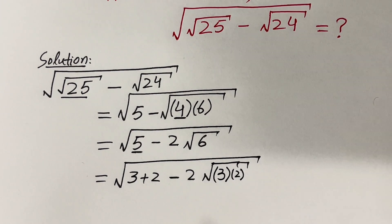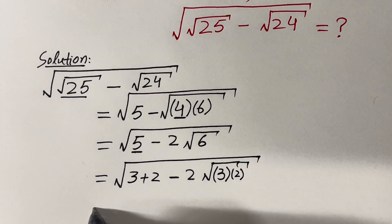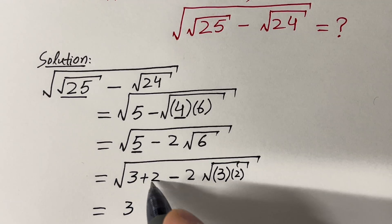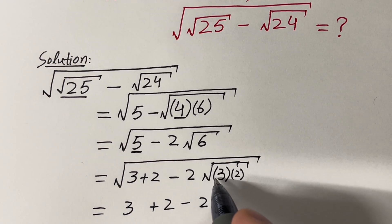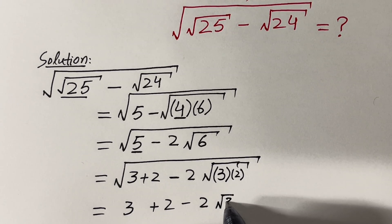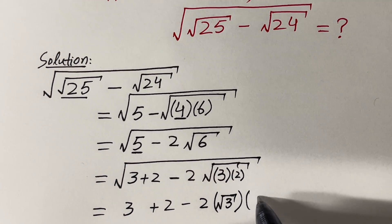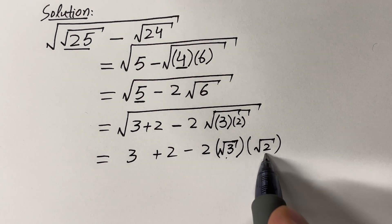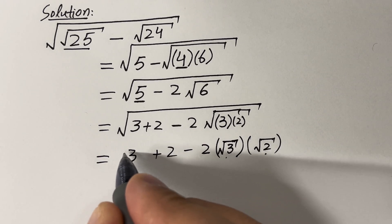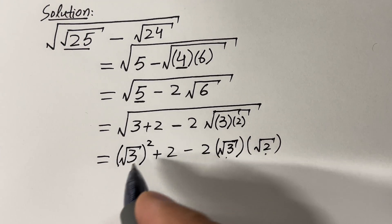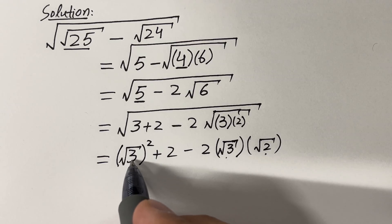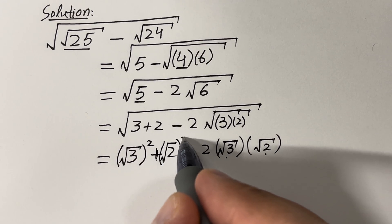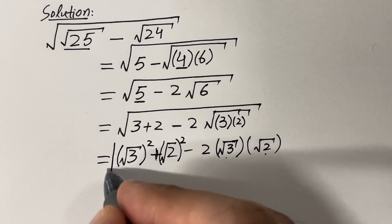So now we have 3 plus 2 minus 2 times square root of 3 times square root of 2, all under a square root. We can write square root of 3 times square root of 2 as square root of 3 times square root of 2. Then we rewrite 3 as (√3)² and 2 as (√2)², since the square and square root cancel each other, leaving the original values. We still have the outer square root on top of everything.